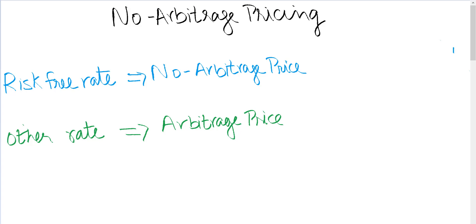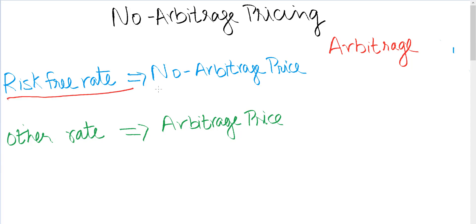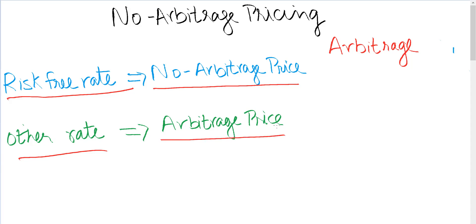In this video I will explain how investors can earn arbitrage when contracts are mispriced. If the contract is priced using the risk-free rate, contracts are currently priced at what is called the no-arbitrage price. But if a rate other than the risk-free rate is used, it means that contracts are mispriced and there is an opportunity to earn arbitrage.